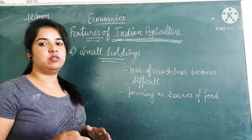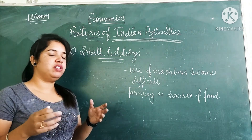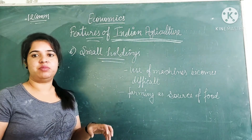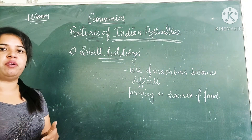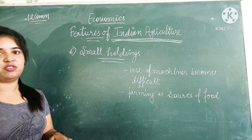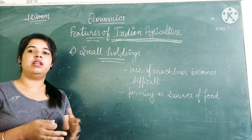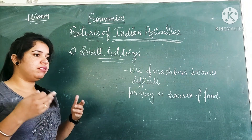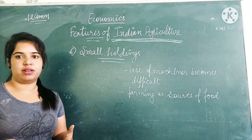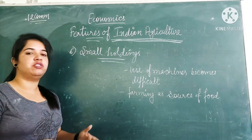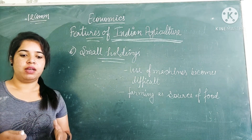The next feature is small holdings. The size of fields is small, and with small size it becomes very difficult to use machines. Machines cannot be used for small holdings because the cost of operating machinery is high while productivity is much less, making it unaffordable. Farmers with small holdings think of farming only as a source of food — subsistence farming — and are not ready to sell extra produce. So small holdings are also a problem for Indian agriculture.